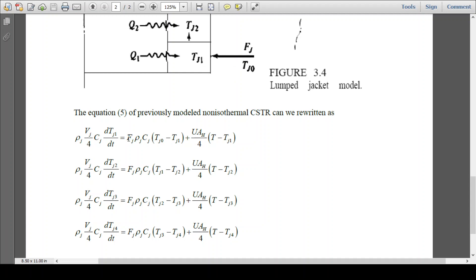So this is flow rate fj, density ρj, heat capacity cj and inlet temperature is tj0. Outlet temperature is tj1 because it will achieve the temperature tj1 here.